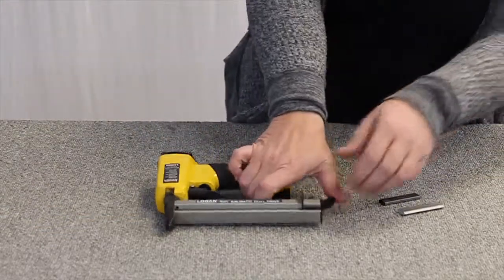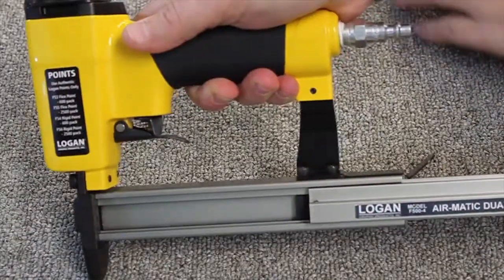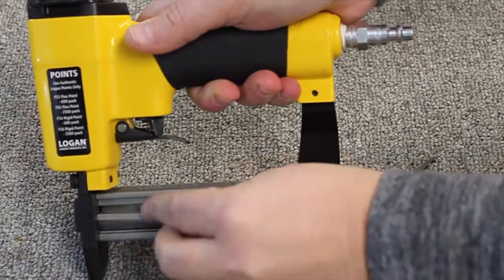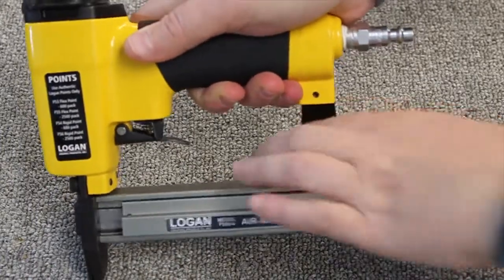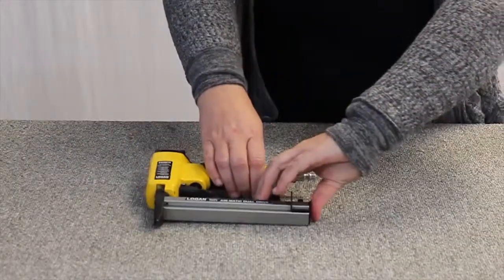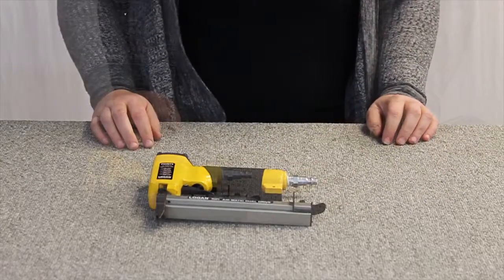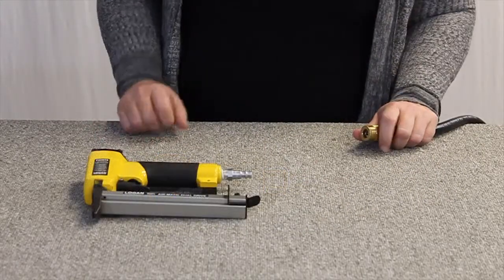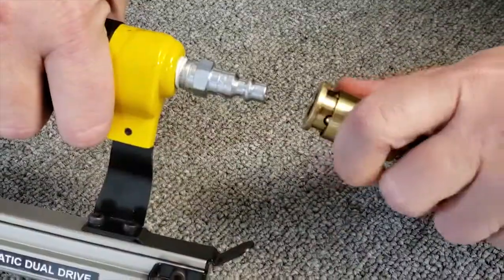To load points in the Airmatic Dual Drive, first release the magazine lever, slide open, and insert strips point side down. Then close and connect your airline to the fitting.